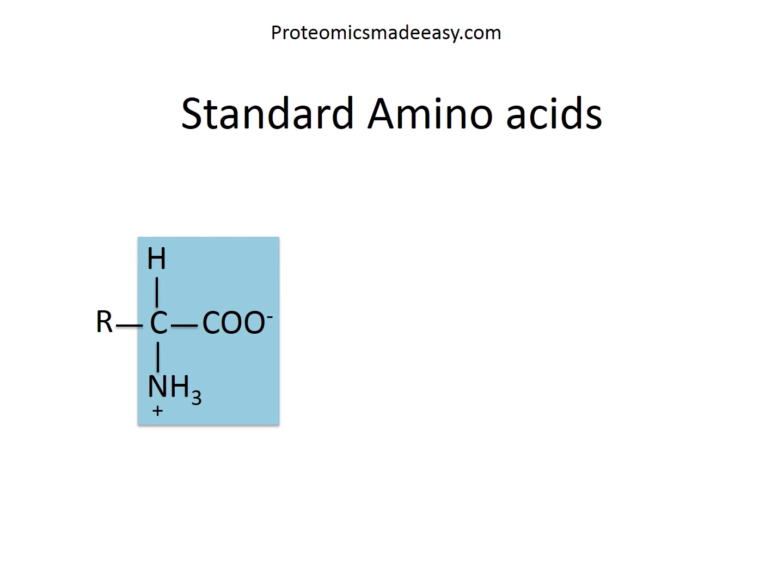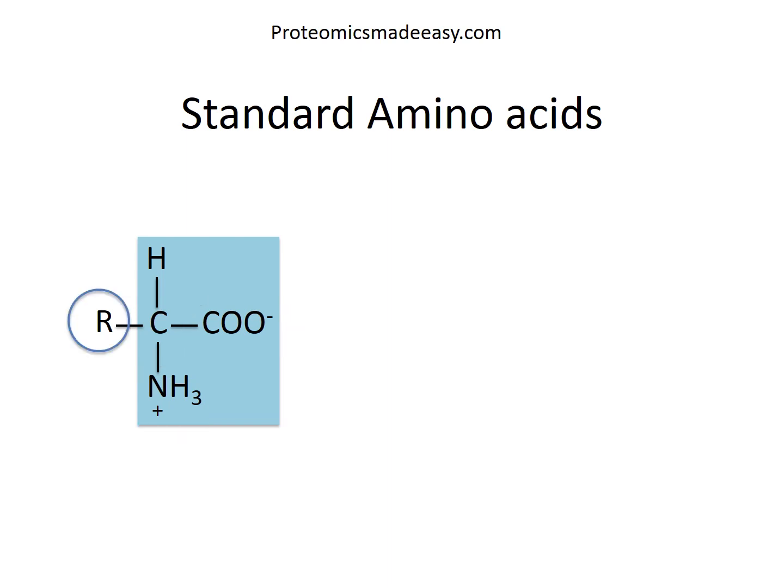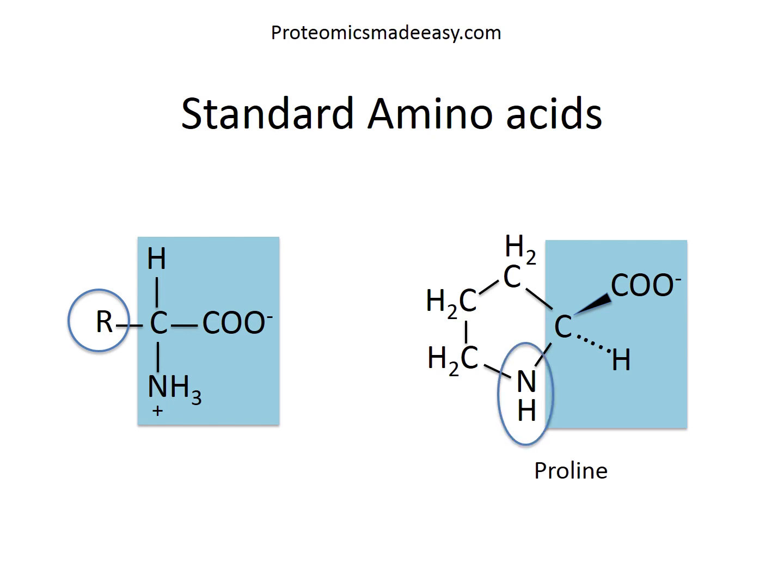What are the standard amino acids? 20 alpha amino acids commonly found in proteins are also called standard amino acids. All amino acids except proline have a common denominator: a free carboxyl group and a free unsubstituted amino group on the alpha carbon atom. They differ from each other in the structure of their distinctive side chains, called the R group. Proline is an exception, which has the R group substituted in the amino group.